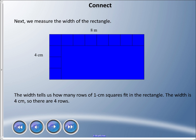Next we're going to measure the width of the rectangle. Here I have one, two, three, four centimeter squares going up and down. The width tells us how many rows of one centimeter squares fit in the rectangle. The width is four centimeters, so there's four rows. If I was to add the new squares, there'd be one here, here, here, and so on.